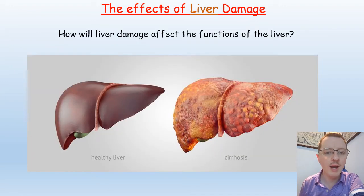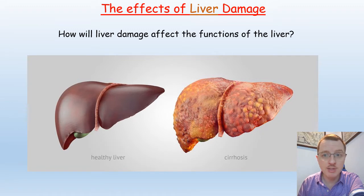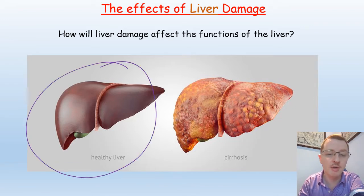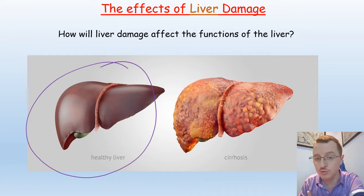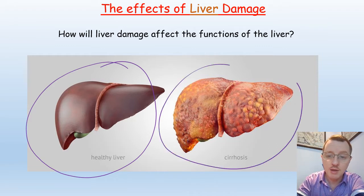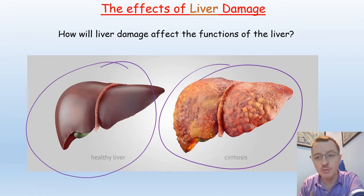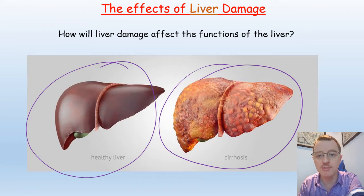But what happens if the liver gets damaged? How will liver damage affect the various different metabolic functions of the liver? Here you can see a nice healthy liver which is able to carry out a large range of those metabolic functions, and on the right we have a liver suffering from a disease called cirrhosis, often caused by drinking excess alcohol, although there are many other causes of liver damage.